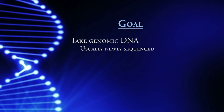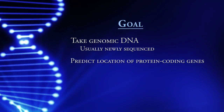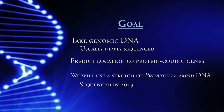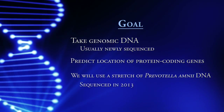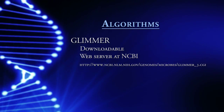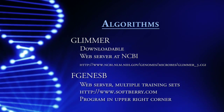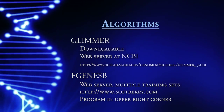Our goal is to take genomic DNA, often freshly sequenced, and predict the location of protein coding genes on that genomic DNA. For this exercise, we will use a stretch of Prevotella amnii DNA. Prevotella amnii is a bacterium that was sequenced in 2013. One algorithm we will use is Glimmer, which is a downloadable program that also has a web server at NCBI. Another is FGenesB, which has a web server with multiple training sets at www.softberry.com. When you go to that address, you can find the programs in the upper right corner.